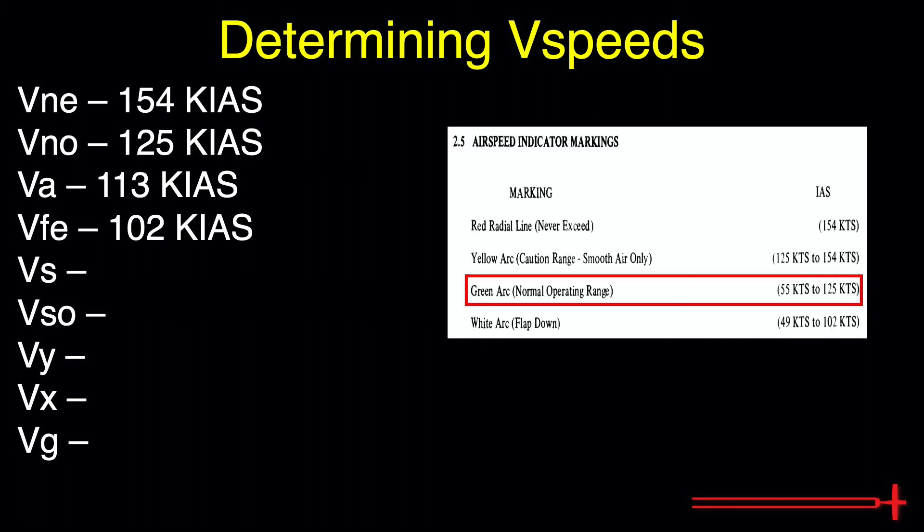The green arc depicts normal operating range without the flaps extended. The lower value depicts VS or clean configuration stall speed of 55 knots. Below that, we can expect aircraft control to suffer or become non-existent. The upper value is our max structural cruising speed. Above that, we risk structural damage unless operating in smooth air.